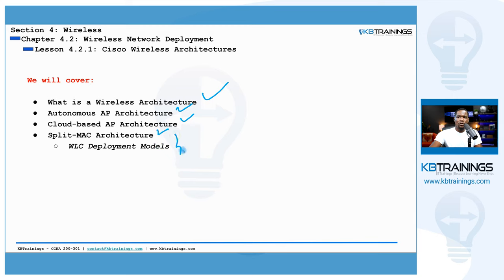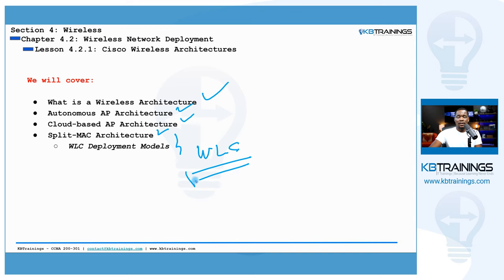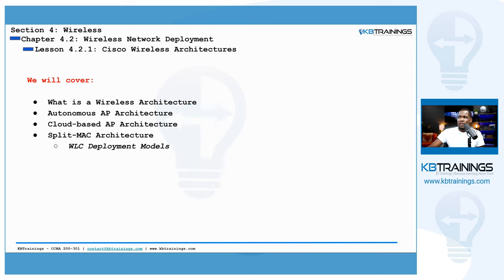We're also going to cover the different deployment models of the WLC, which is the wireless LAN controller that we've seen in the first chapter. We covered it before, but we're going to go a little further and I'll show you the different ways you can deploy the WLC in your wireless network.